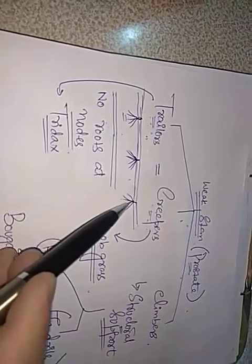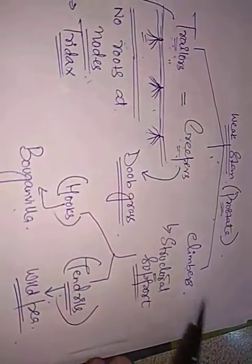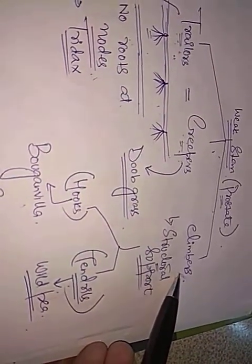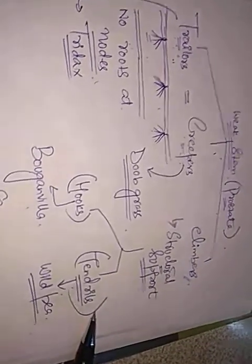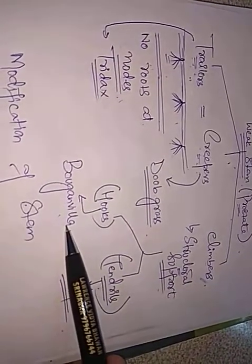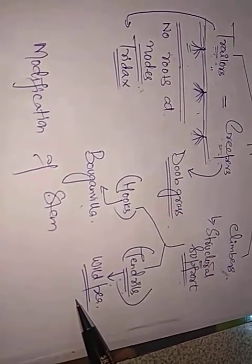In summary, trailers are creepers without roots at the nodes. The third category is climbers — plants which climb by means of some structural support or by the development of structures that coil around a support for climbing. Sometimes they form hooks, for example in bougainvillea, and sometimes they form tendrils, for example in wild pea.